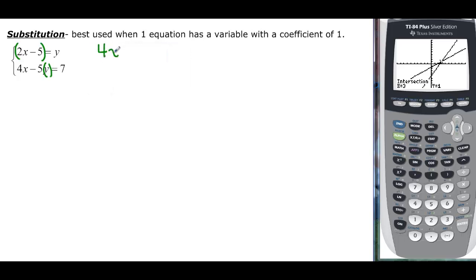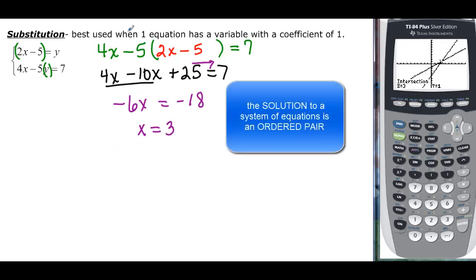I start out by writing my problem: 4x minus 5y equals 7, but I'm going to replace that y with 2x minus 5. Now I just solve the equation: 4x minus 10x, negative 5 times negative 5 is plus 25, equals 7. If I take a look at these two, I get negative 6x, and if I take this to the other side, it's going to equal negative 18. Divide by negative 6: x is going to equal positive 3.